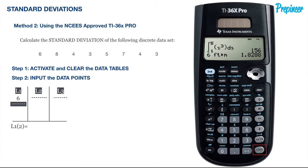Start with the first data point, which is six, input that into the calculator and press enter. This will take you to the next data line in the L1 column where you will input the second point and press enter. Input the remaining data points and when complete, hit the second button and the mode button to select the quit option, which is highlighted in blue.